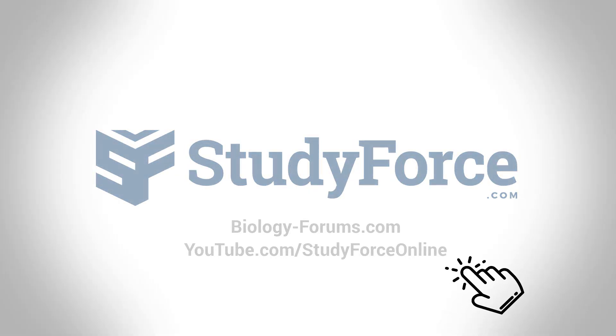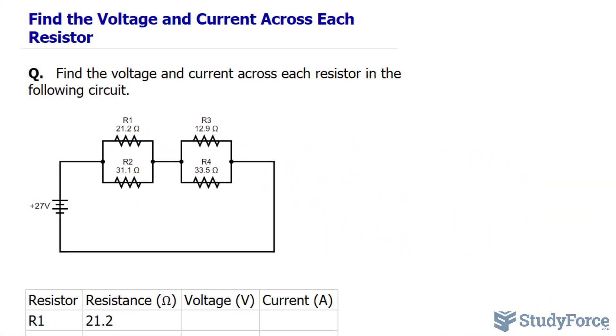In this lesson, I'll show you how to find the voltage and current across each resistor in this circuit. The question reads: find the voltage and current across each resistor in the following circuit.